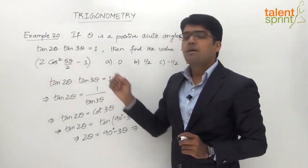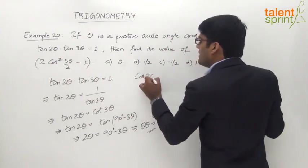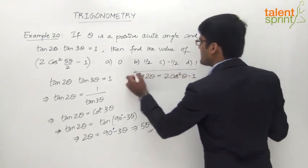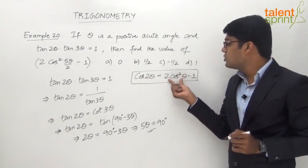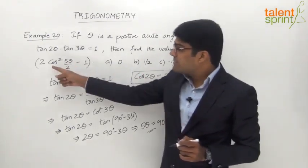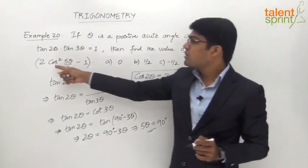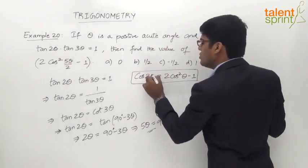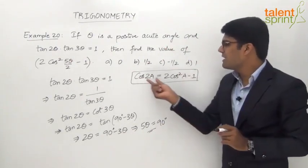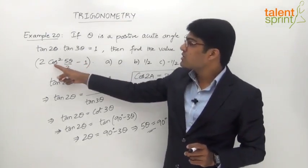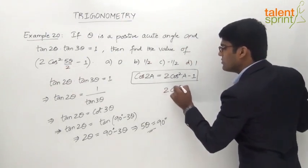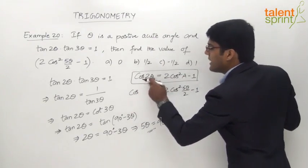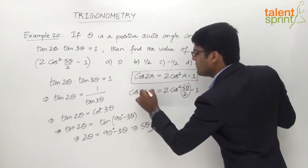Now looking at the expression 2 cos square 5 theta by 2 minus 1, we recall the double angle formula: cos 2a = 2 cos square a minus 1. The expression 2 cos square 5 theta by 2 minus 1 is of exactly this form, where a equals 5 theta by 2. So it equals cos of 2 times 5 theta by 2, where the 2s cancel, giving us cos of 5 theta.